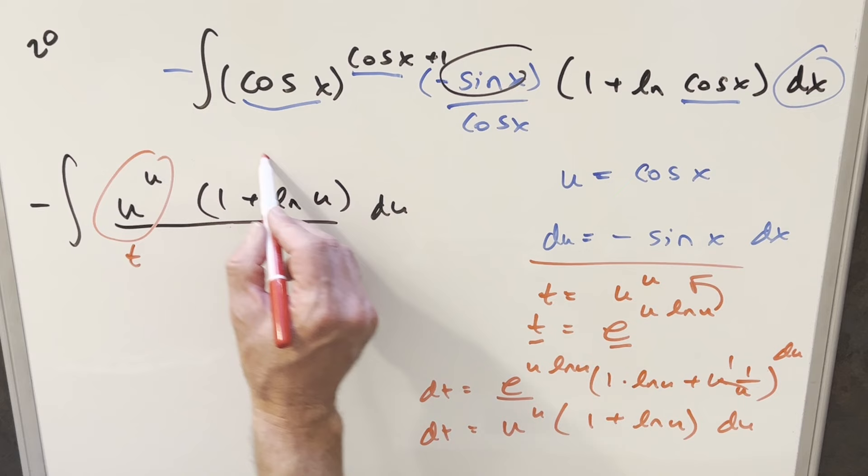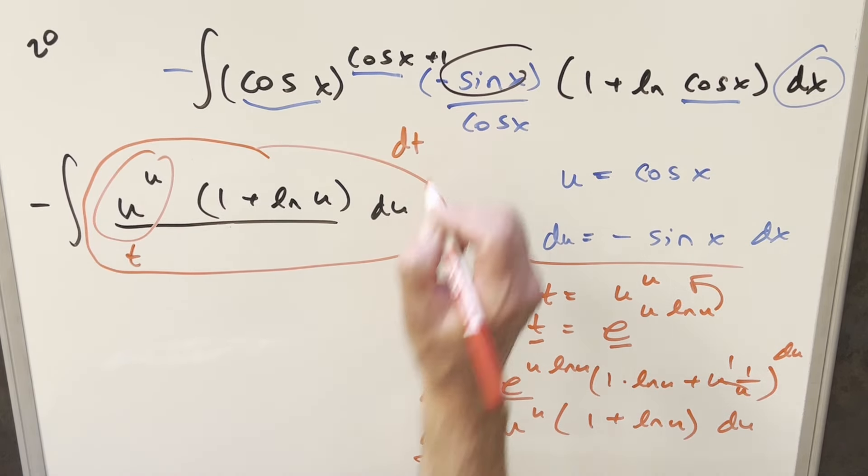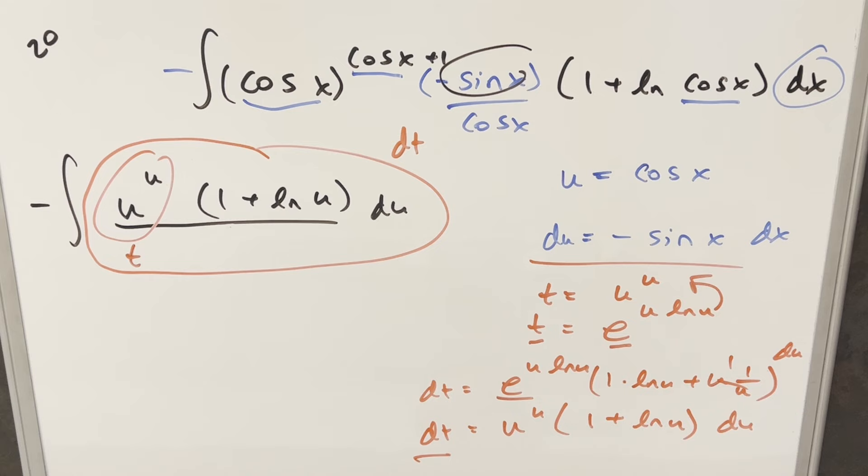And then what do we notice? All this stuff right here, this is actually going to be the same as our dt value. So going ahead with this really quick, we have our minus sign in front. Everything is just dt or like 1 dt. Integral of this, we're going to just get minus t.